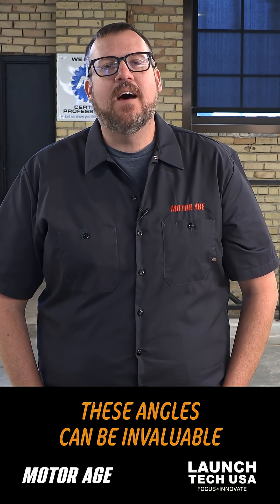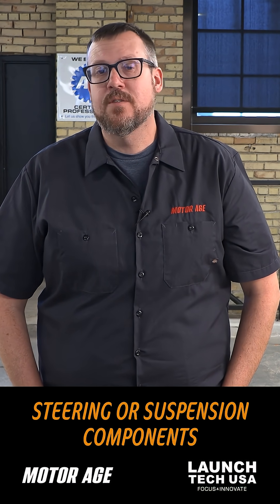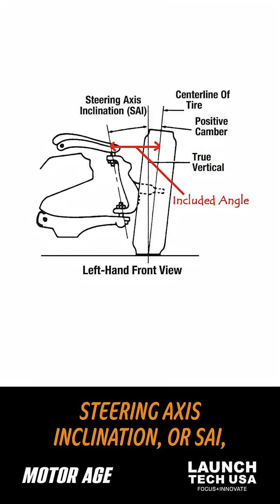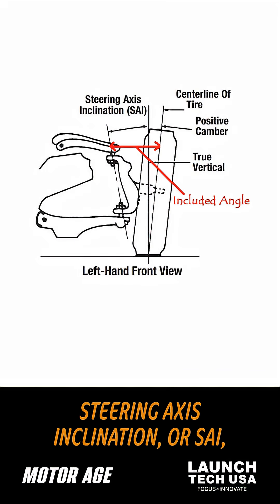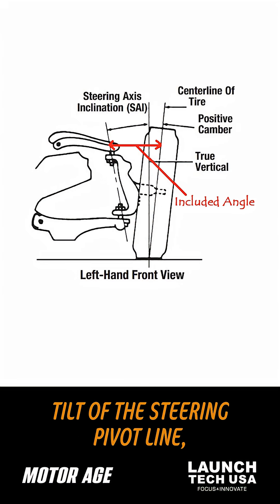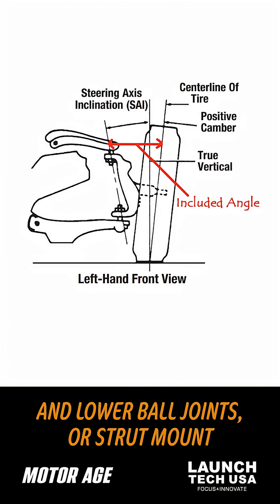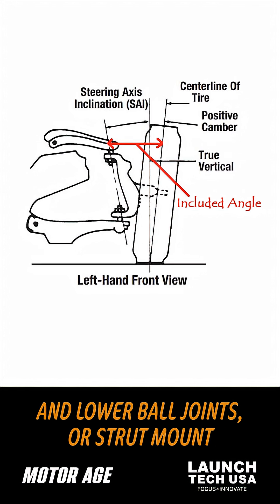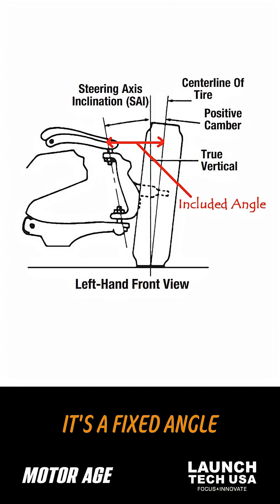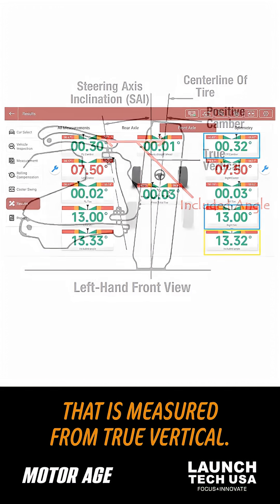These angles can be invaluable when you are looking for steering or suspension components that are bent. Steering axis inclination, or SAI, is the inward tilt of the steering pivot line, usually drawn through the upper and lower ball joints, or strut mount and lower ball joint. It's a fixed angle that is measured from true vertical.